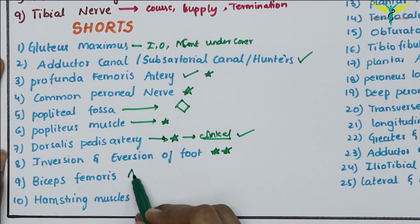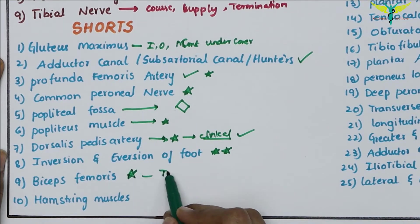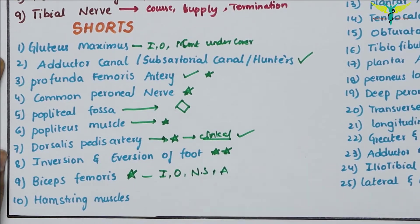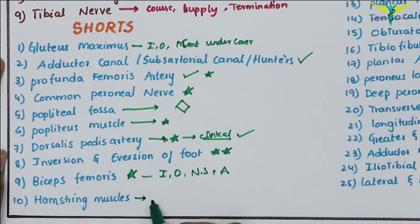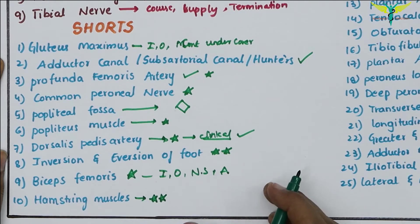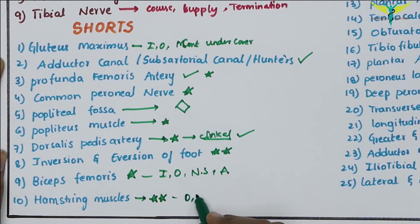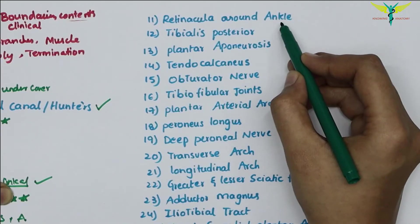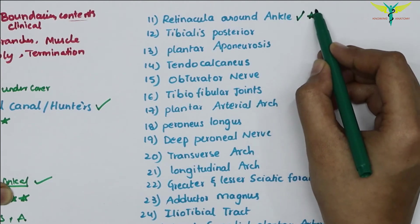The biceps femoris is very important — write about its origin, insertion, nerve supply, and action, with a neat diagram. The hamstring muscles are very very important in shorts or essays. You should write the origin, insertion, nerve supply, and distinguish between true hamstrings and false hamstrings.